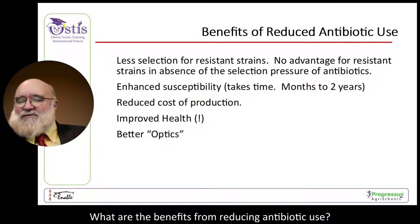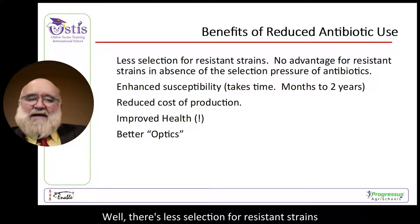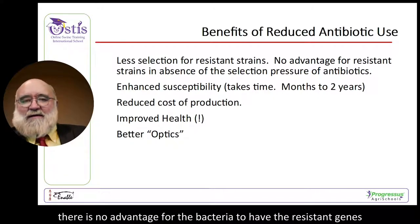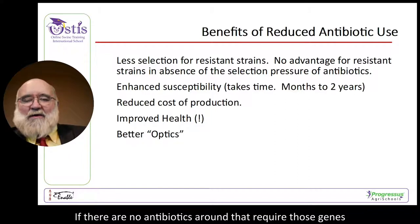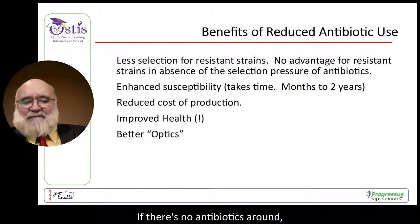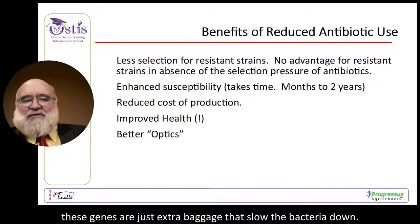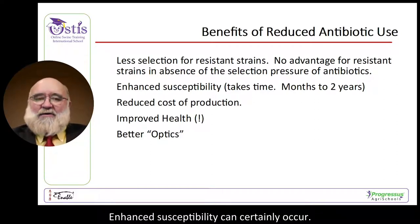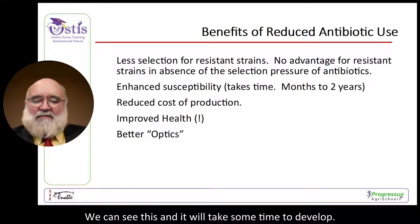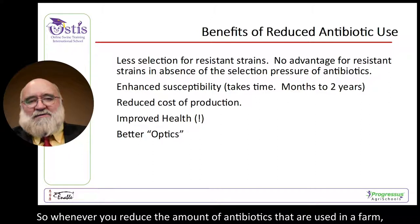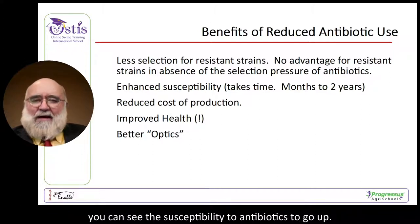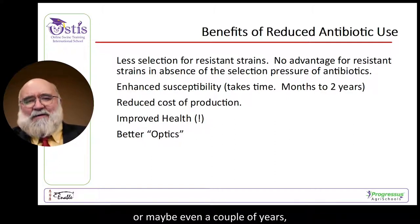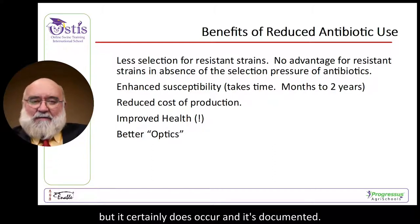What are the benefits from reducing antibiotic use? There is less selection for resistant strains — if there are no antibiotics around, bacteria have no advantage in having resistant genes, and those genes become extra baggage that slows the bacteria down. Enhanced susceptibility can certainly occur; when you reduce the amount of antibiotics used on the farm, susceptibility to antibiotics goes up, though it may take a few months or even a couple of years to develop. It is documented.